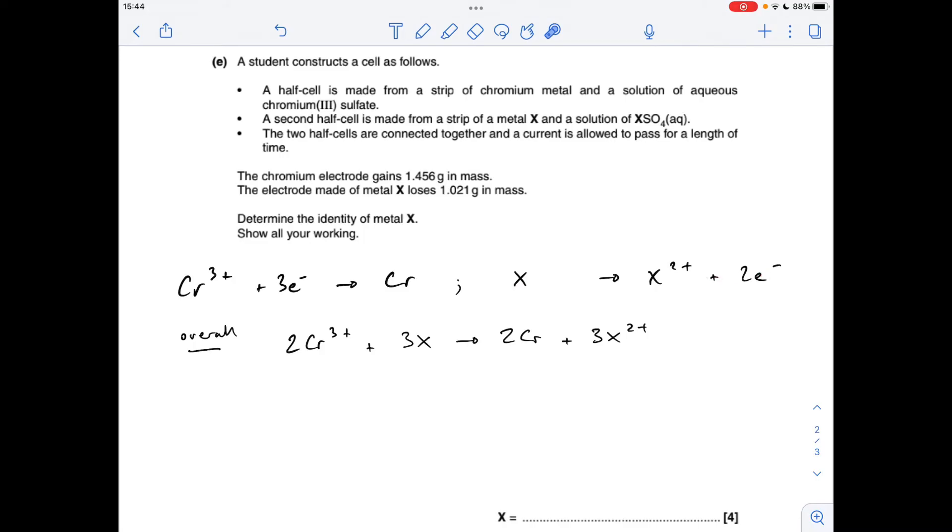And then from this mass information, we can work out the moles of chromium that's been gained, so mass over Mr, 0.028. And then from the mole ratio in this overall equation, we can work out the moles of X that's been lost.